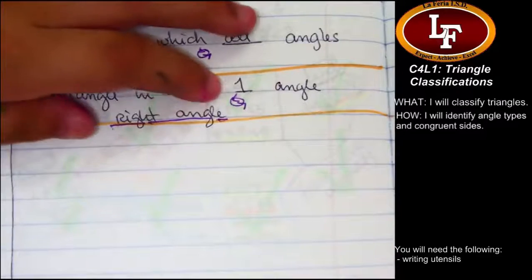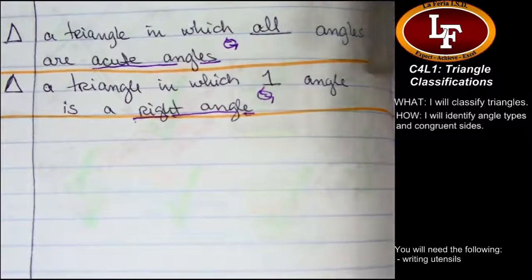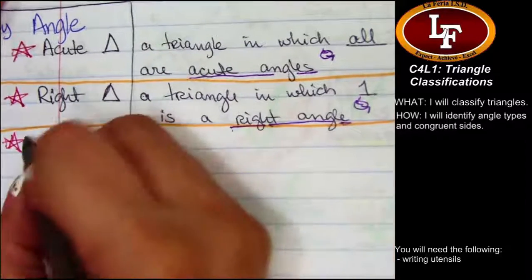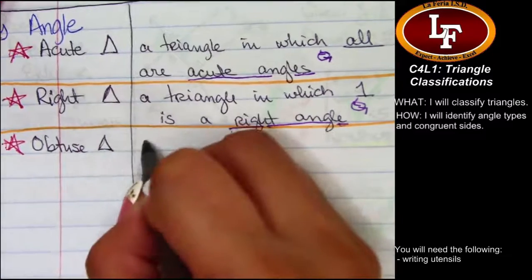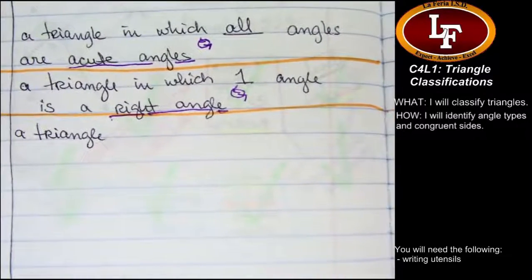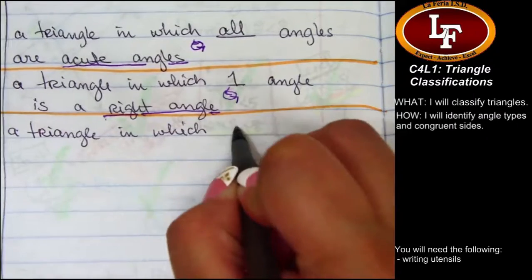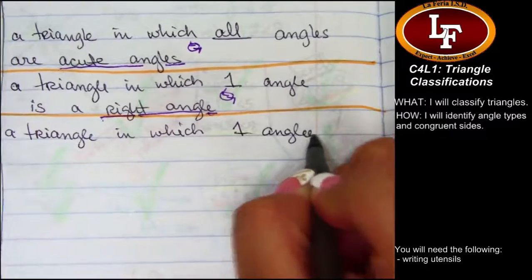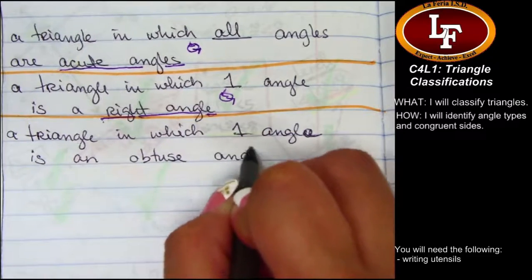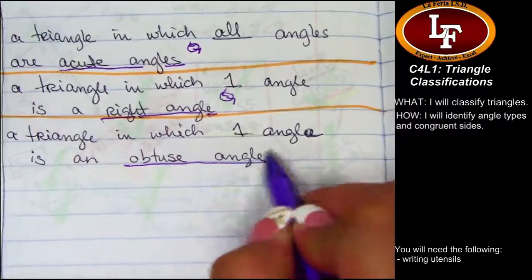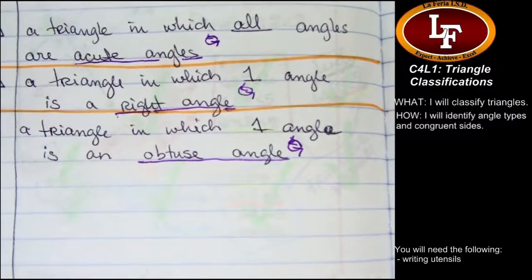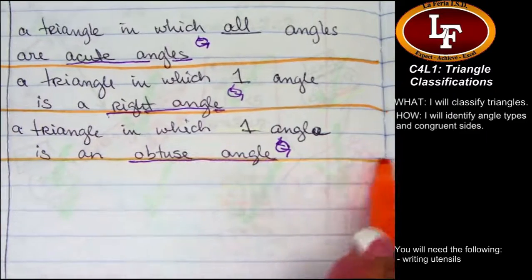Mom, what's this little symbol there? That's our recall symbol. It's like, it looks almost like the recycling symbol a little bit. Because we are recycling knowledge. Got it. The next triangle classification is the obtuse triangle. The obtuse triangle is a triangle in which one angle is an obtuse angle.